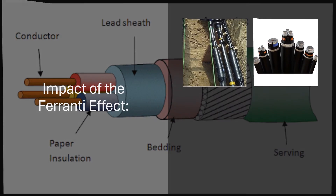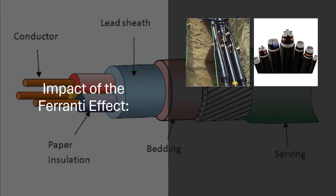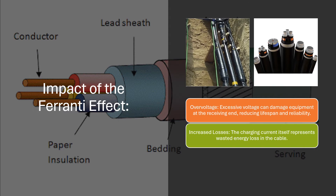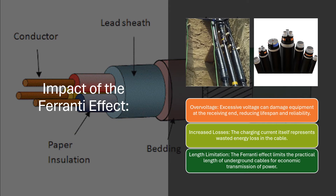Impact of the Ferranti effect. Overvoltage: excessive voltage can damage equipment at the receiving end, reducing lifespan and reliability. Increased losses: the charging current itself represents wasted energy loss in the cable. Length limitation: the Ferranti effect limits the practical length of underground cables for economic transmission of power.